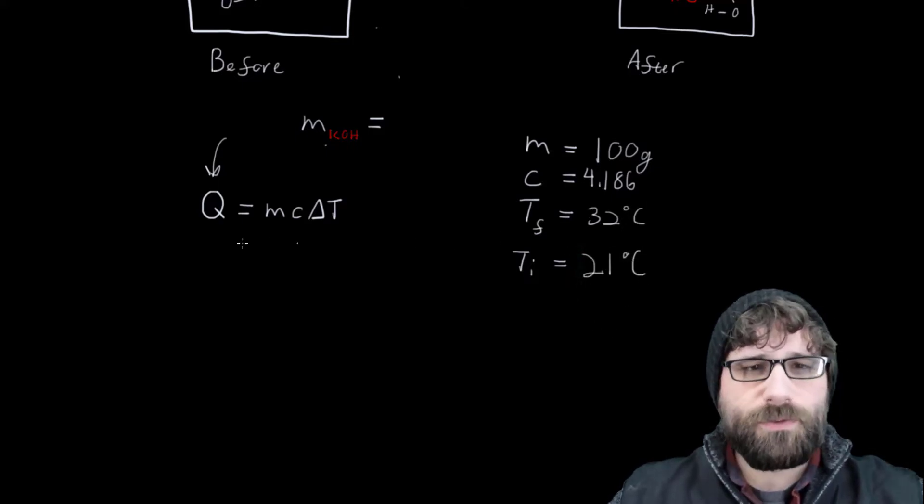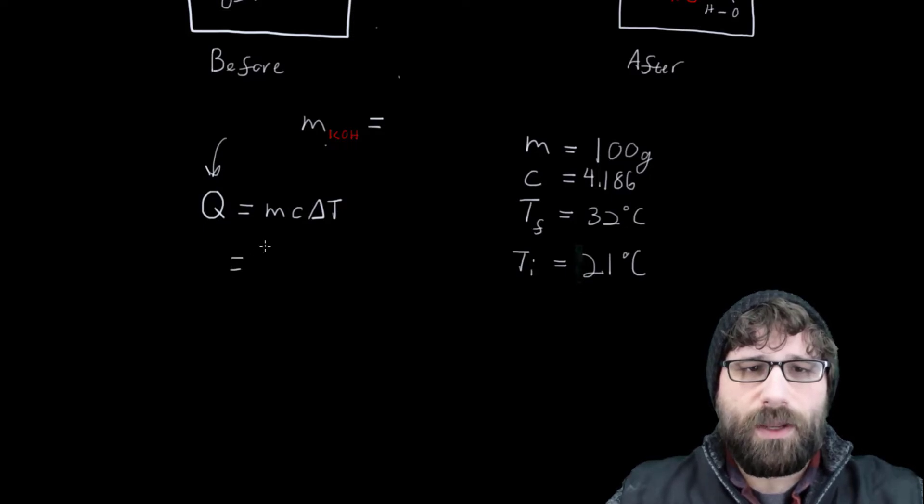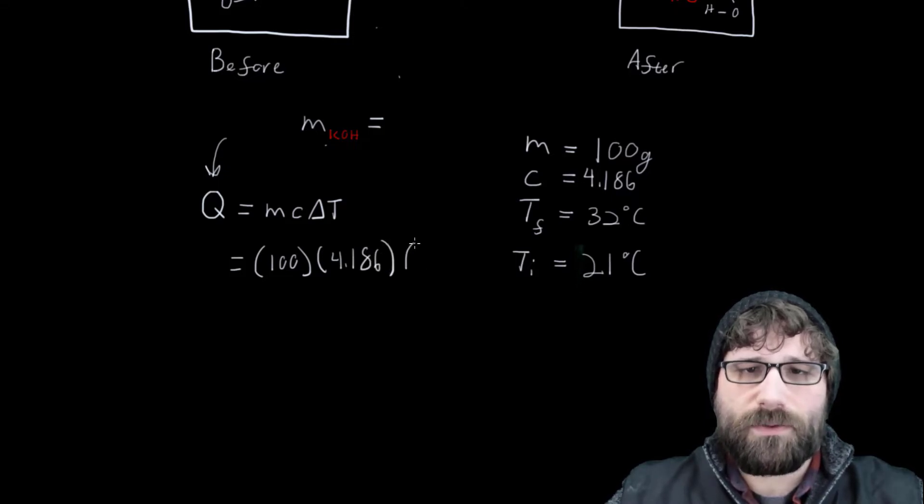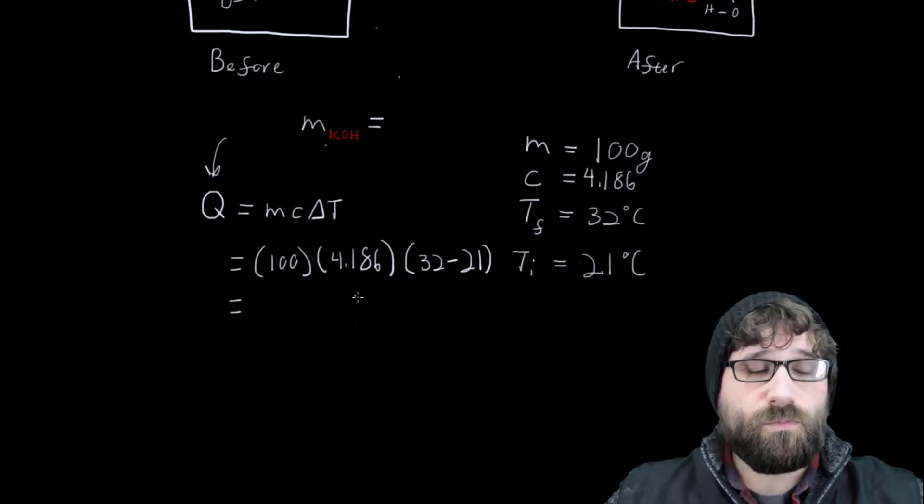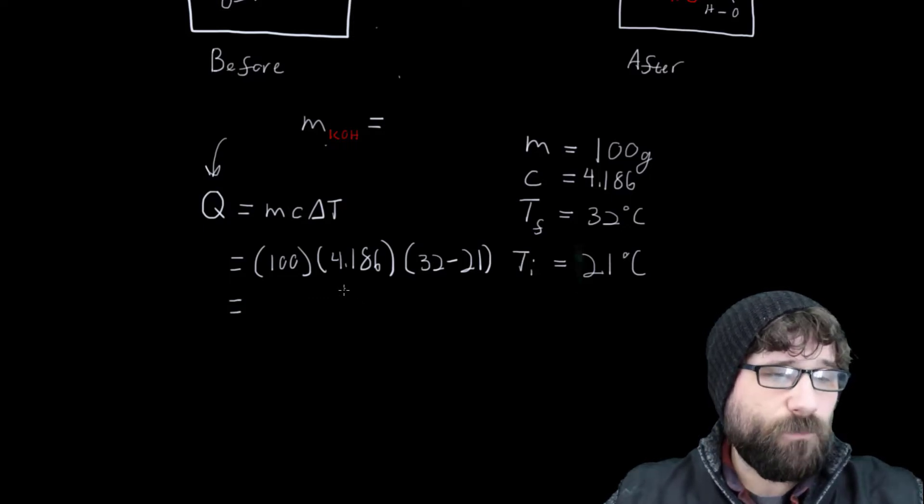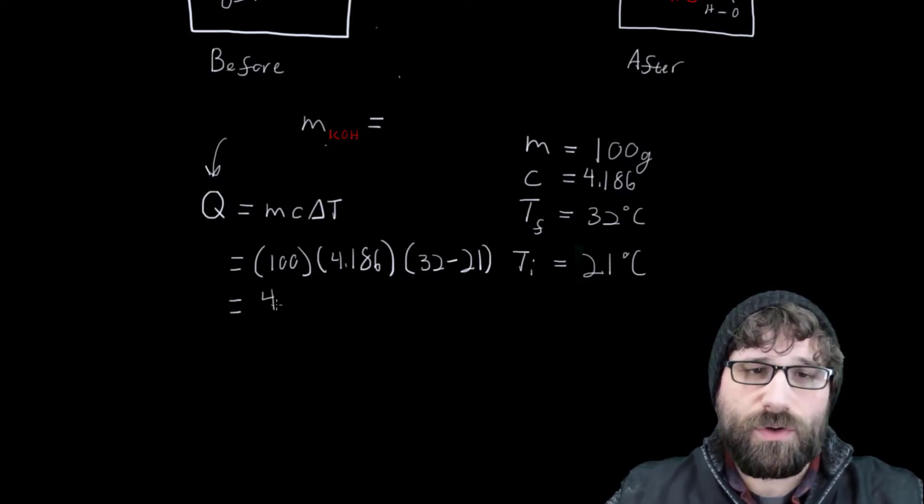So if we plug those numbers in, what we're going to get is 100 times 4.186 times 32 minus 21. And when we run all of those calculations together, we're going to get a value of 4,605 joules.